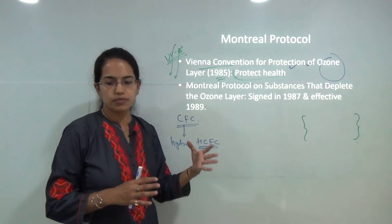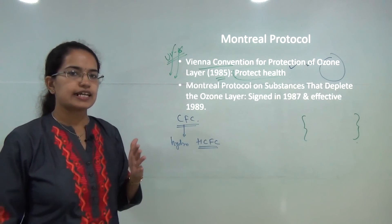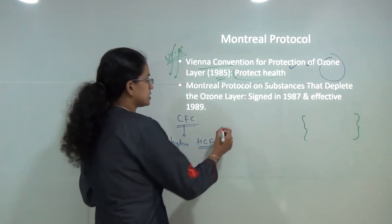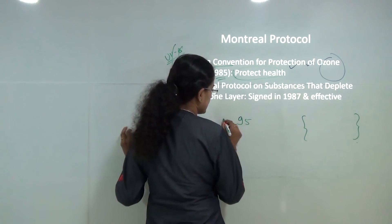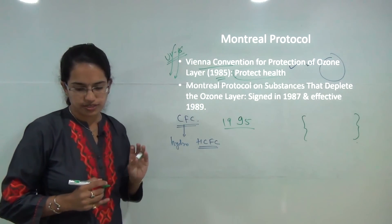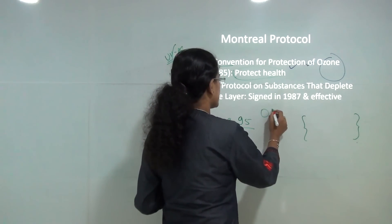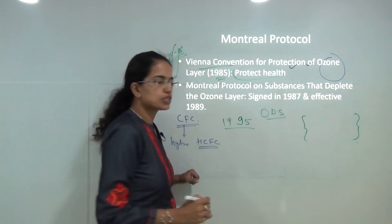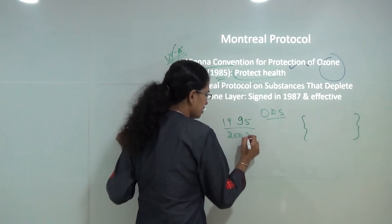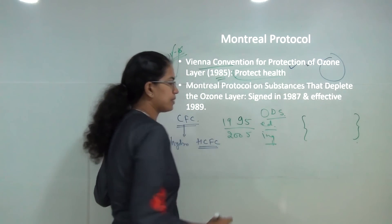There was a shift from CFCs, with separate deadlines set for developed and developing nations. For developed nations, they should curb production of ozone-depleting substances (ODS) by 1995, though this deadline was extended to 2005 for developing nations.